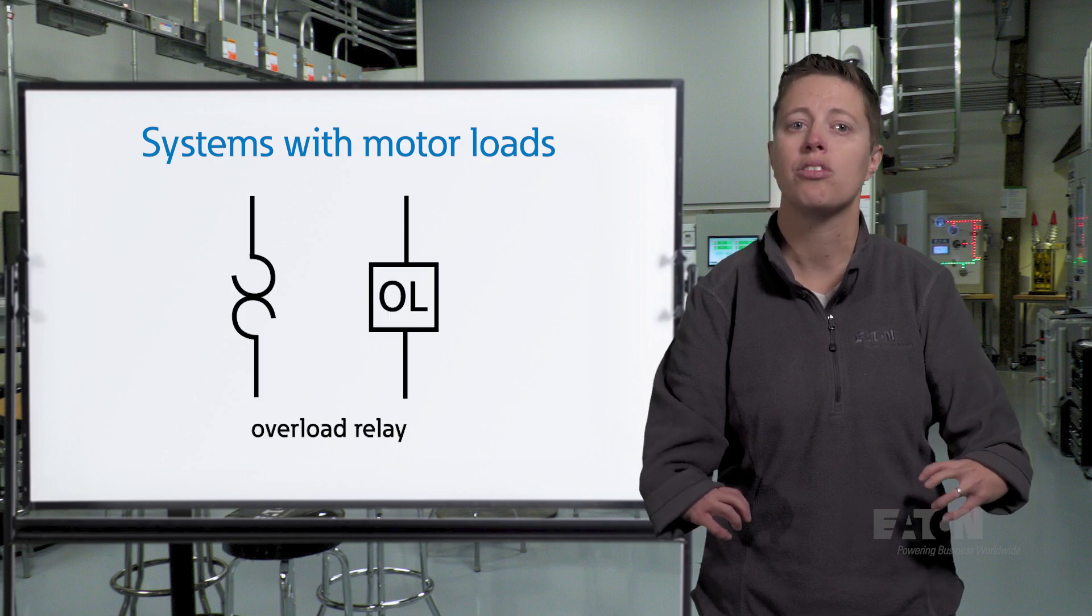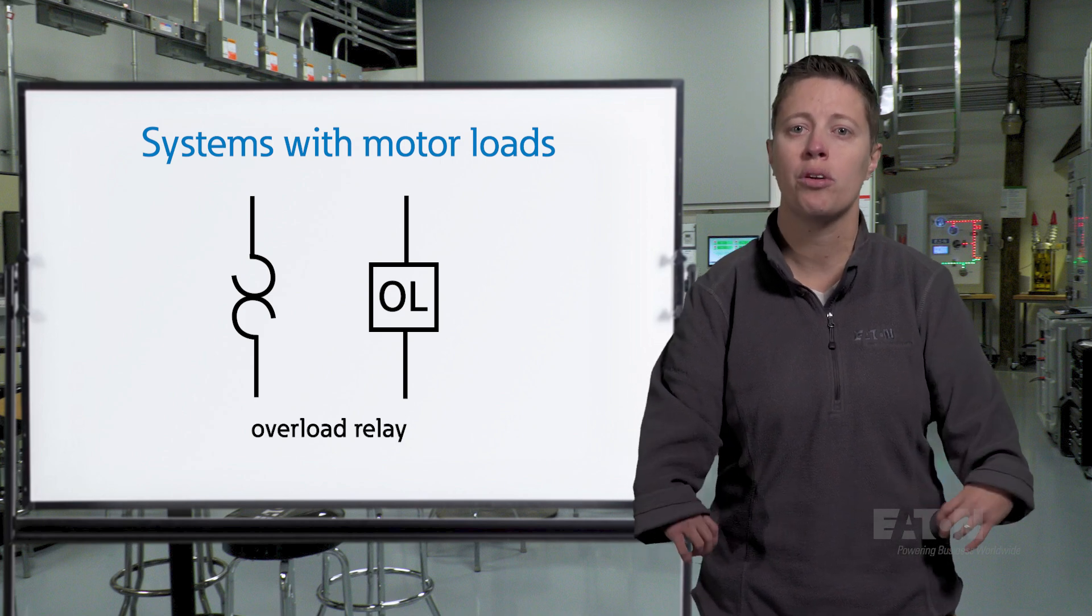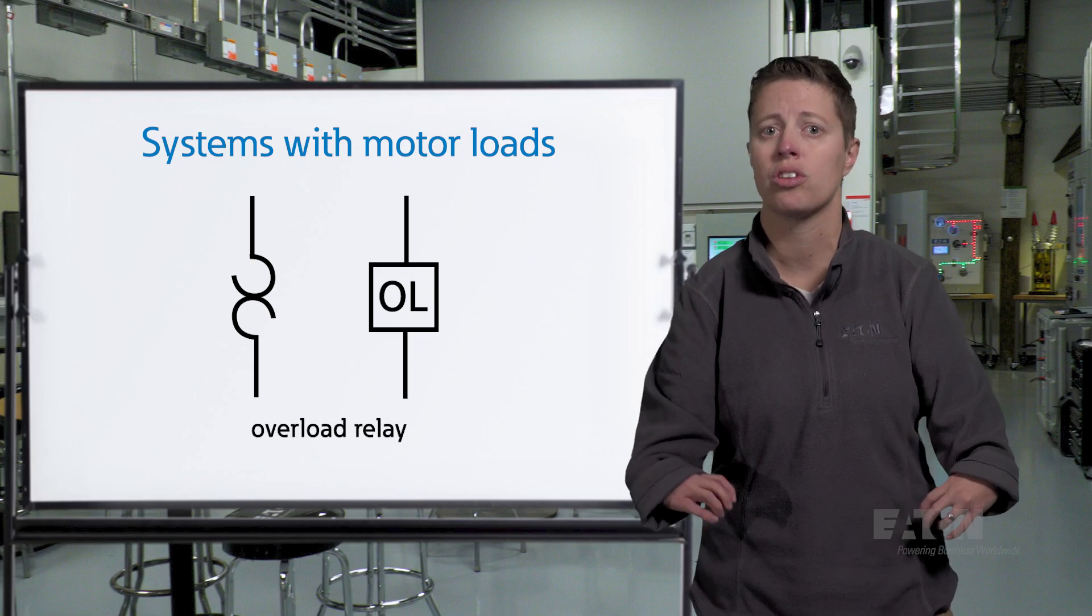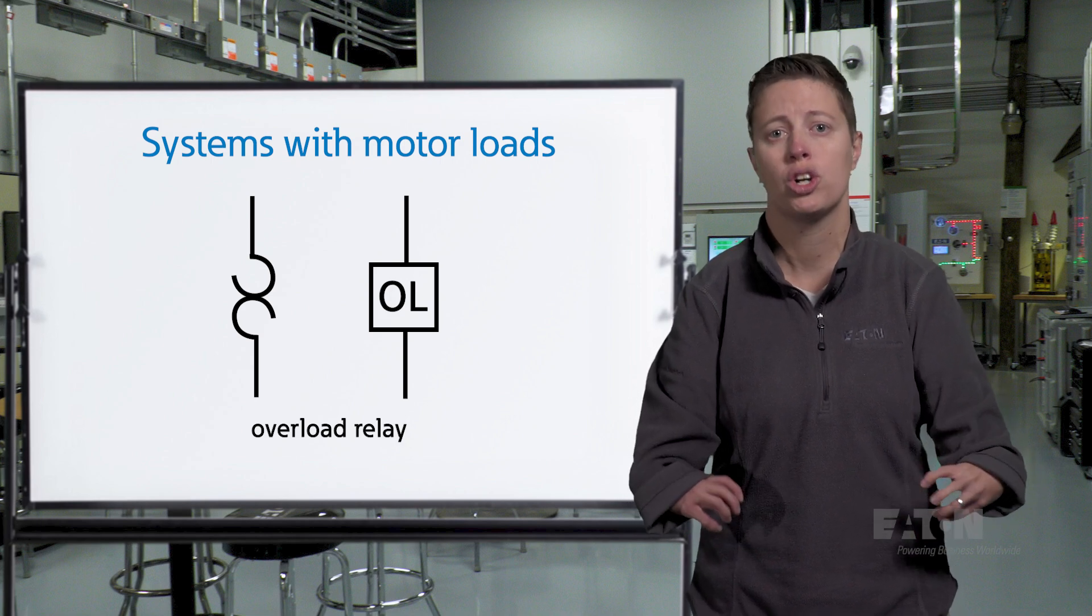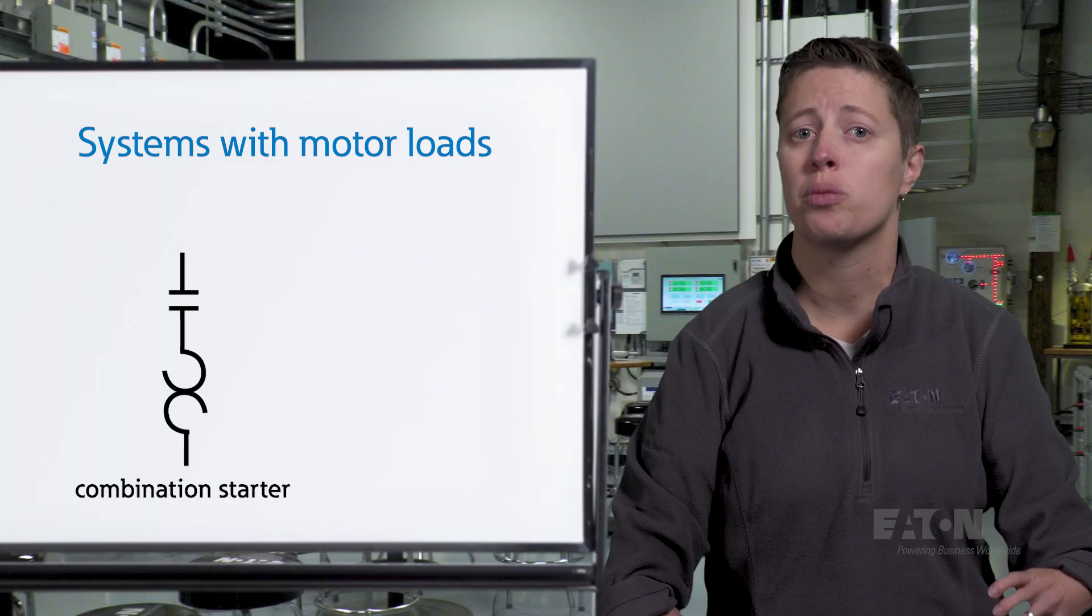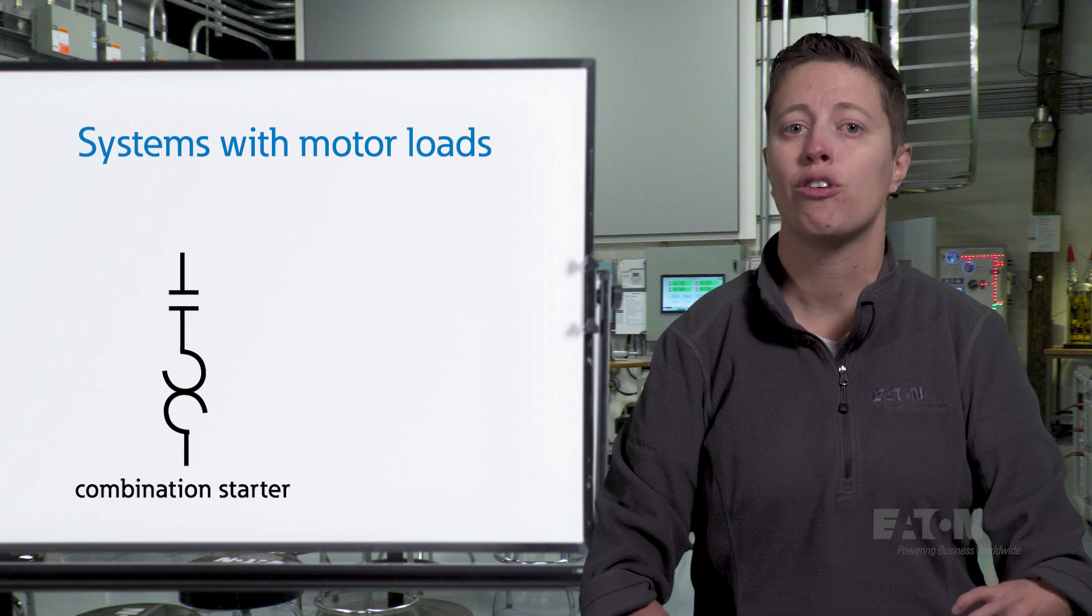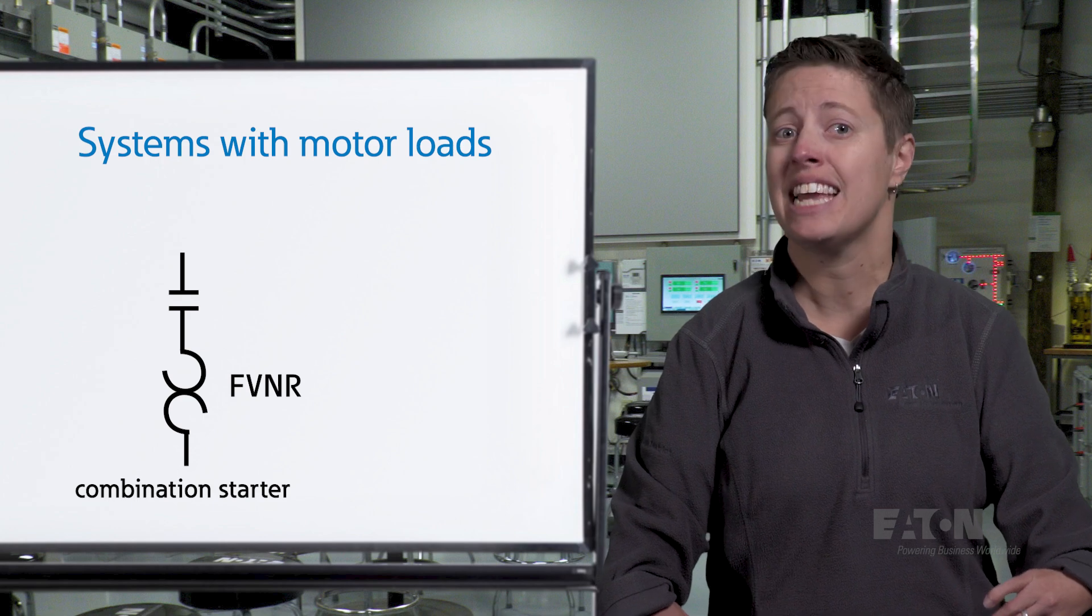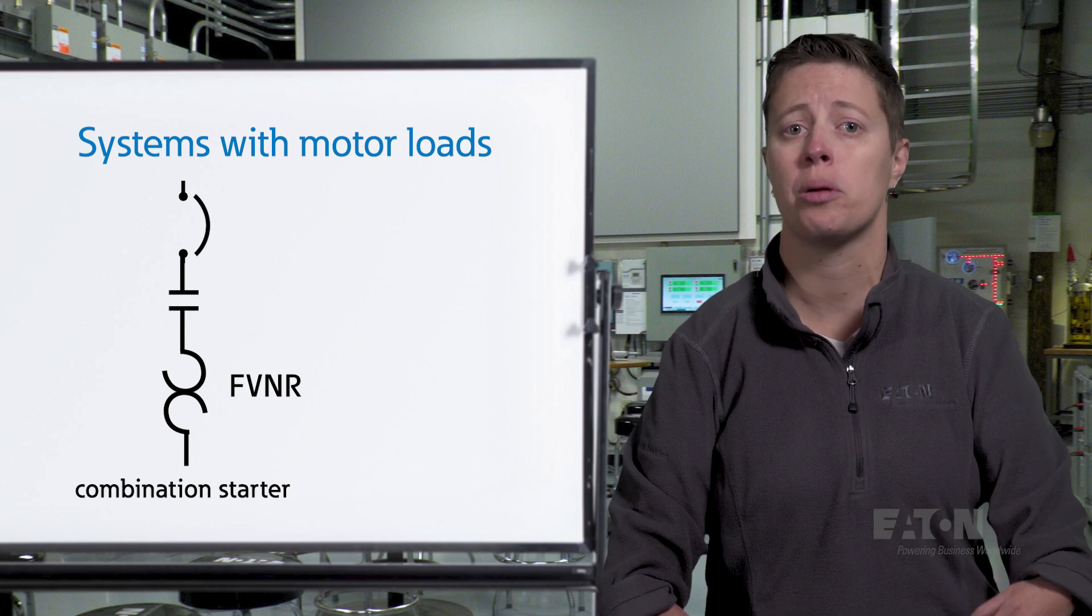An overload relay is noted by two linked, broken semicircles or a block labeled OL. An overload relay protects motors from overheating due to prolonged overcurrent conditions, called overloads. This is different than a circuit breaker trip unit, which provides shorter term short circuit protection, as well as overload protection. A contactor in series with an overload relay represents a combination starter. In this example, we see a full voltage, non-reversing starter. The starter may be labeled FVNR on the single line and may include a switch or circuit breaker disconnect upstream of the contactor.